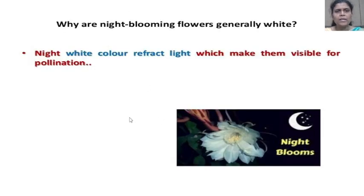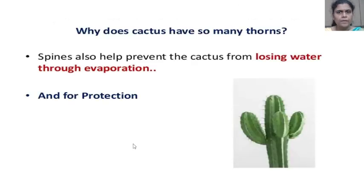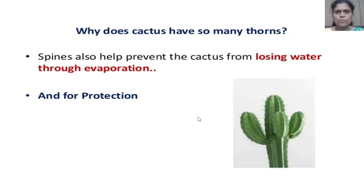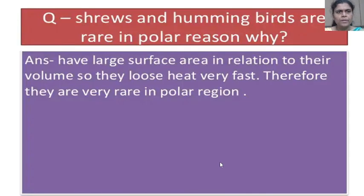Why are night-blooming flowers generally white? Night-blooming flowers are white because the white color reflects light, which makes them visible for pollination. Why does cactus have so many thorns? Spines help prevent the cactus from losing water through evaporation and also provide protection.